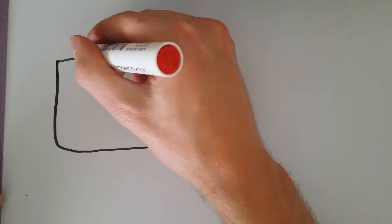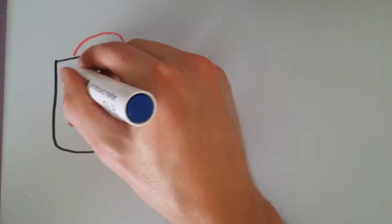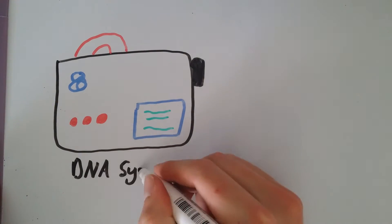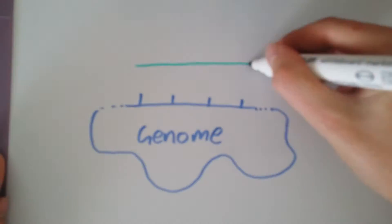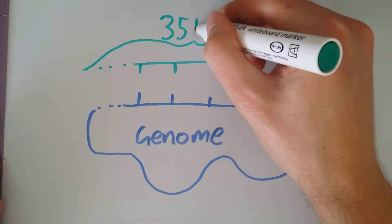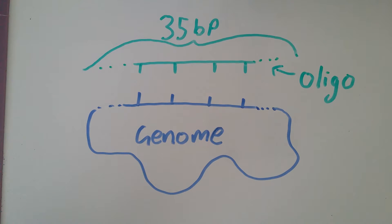To incorporate these changes, single-stranded DNA sequences known as oligonucleotides or oligos are synthetically designed in a lab. These sequences need to have at least 35 base pairs of complementary sequence to their target location within the genome.